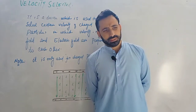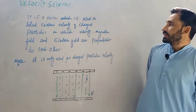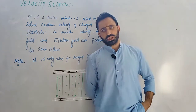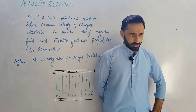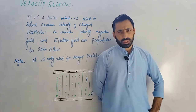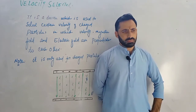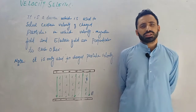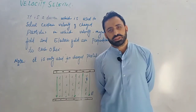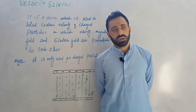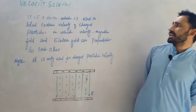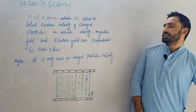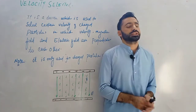What is the most important indication? The velocity selector is a device. The velocity is selective — the velocity is selected. That is the velocity of the device. The charged particles are selected at a certain velocity.